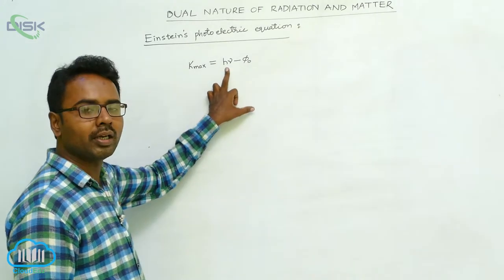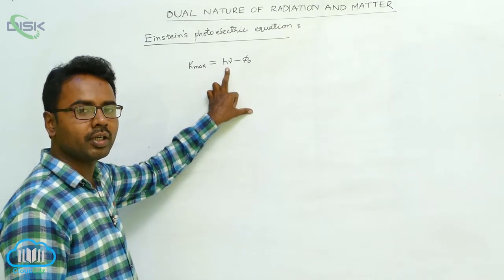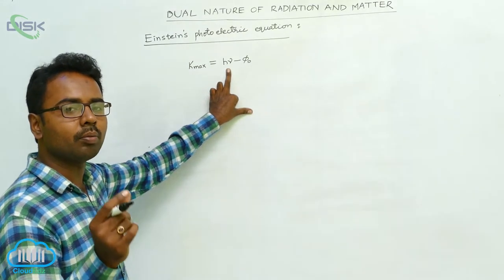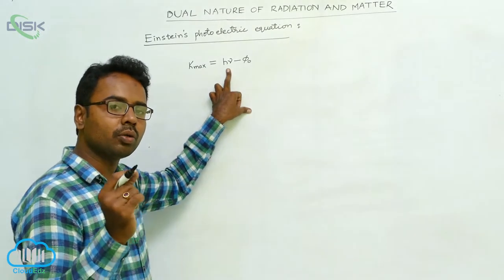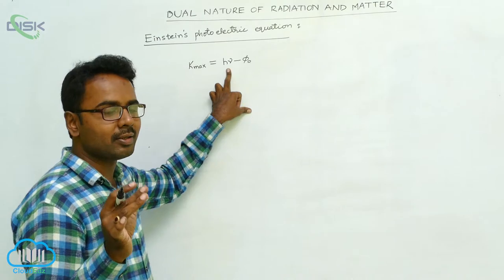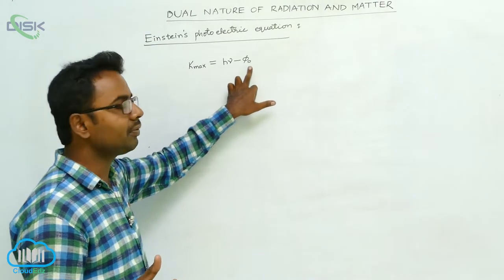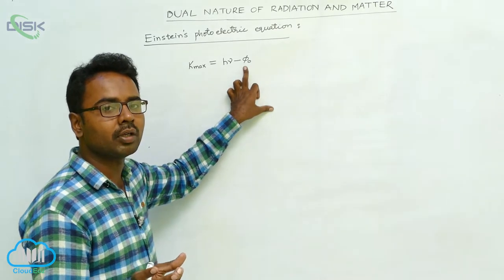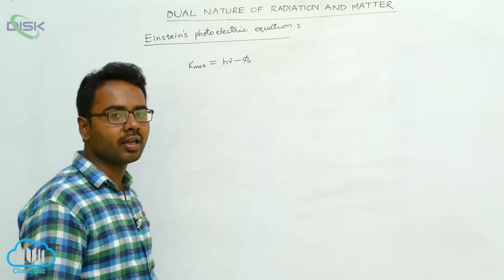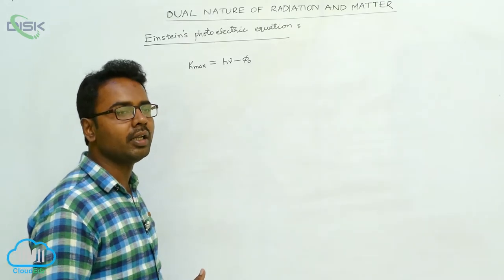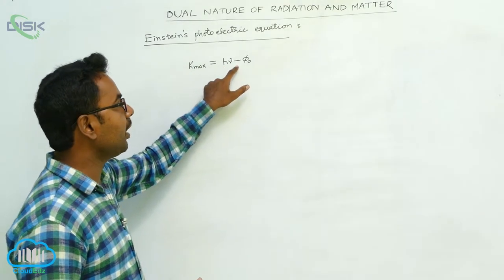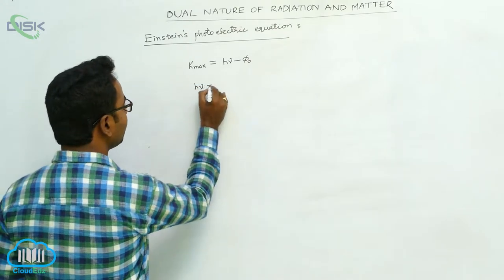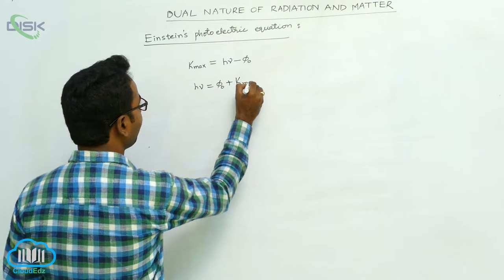Here hν is the total energy of the photon. From this total energy, some part called the work function is used — the work function is the minimum amount of energy required for the electron to just detach from the metal surface. The remaining energy is given to the electron as maximum kinetic energy. So K_max = hν − φ₀, which can also be written as hν = φ₀ + K_max.